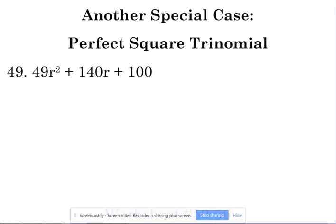These are trinomials. So this is like number 49. Instead of the difference of perfect squares, this is a perfect square trinomial. Trinomial means it has three terms, so we're back to three terms here. Notice the first and last are perfect squares.